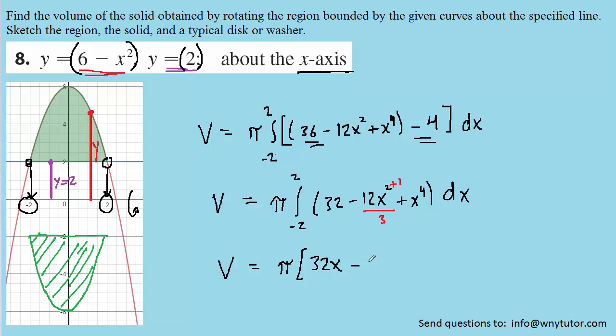Same rule for x to the fourth. We add one to the exponent to make it x to the five, and then divide by that new exponent. And then we include our limits of integration from negative two to two.